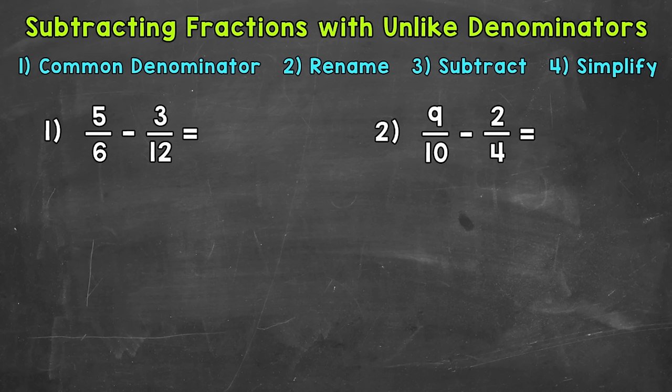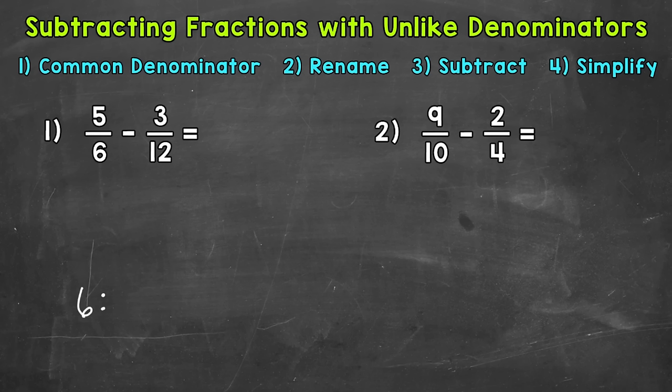So let's start by writing some multiples of both 6 and 12 to find that least common multiple. I would suggest writing out 4 or 5 multiples for each denominator. If 4 or 5 multiples don't work and you don't see any common multiples, extend those lists.